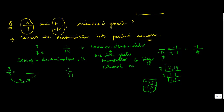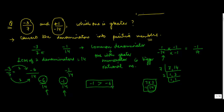We convert both fractions so that the denominator is the LCM, which is 14. For minus 1 upon 14, it's already the same. For minus 3 upon 7, we multiply numerator and denominator by 2 to get minus 6 upon 14. Now with both numbers as minus 6 upon 14 and minus 1 upon 14, we compare the numerators. Since minus 1 is greater than minus 6, minus 1 upon 14 is greater than minus 3 upon 7.